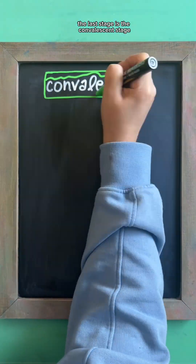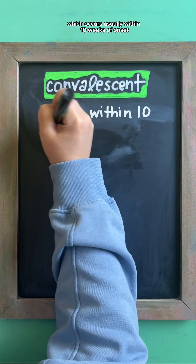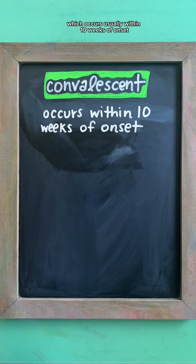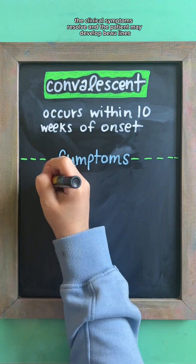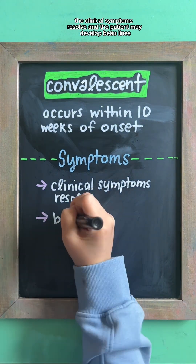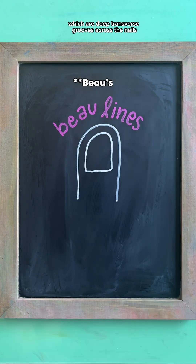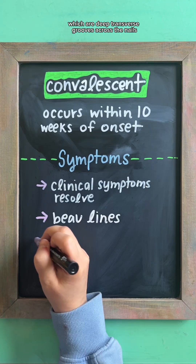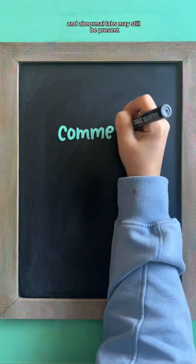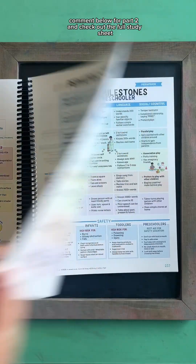The last stage is the convalescent stage, which occurs usually within 10 weeks of onset. In this stage, the clinical symptoms resolve, and the patient may develop Beau's lines, which are deep transverse grooves across the nails, and abnormal labs may still be present. Comment below for part two and check out the full study sheet in the nursing school success bundle.